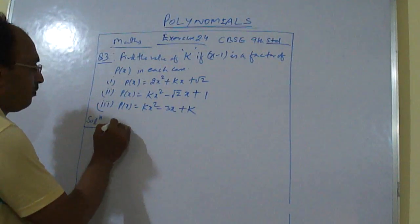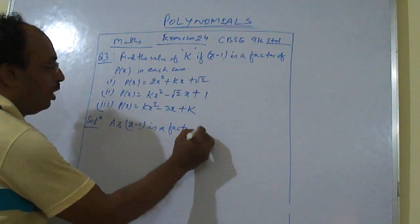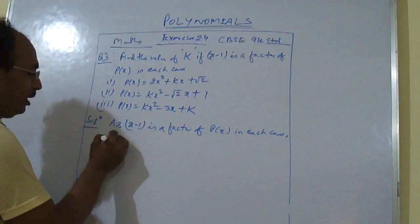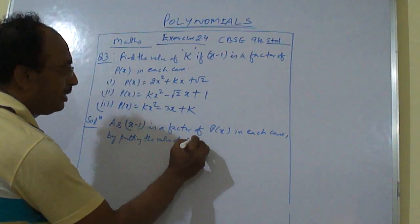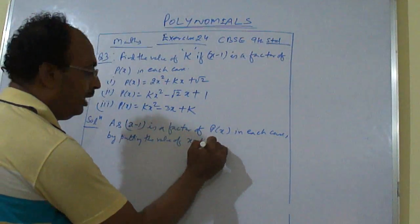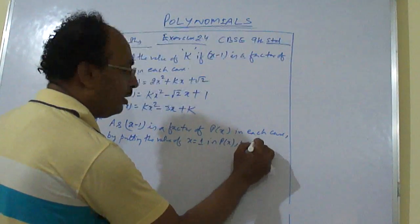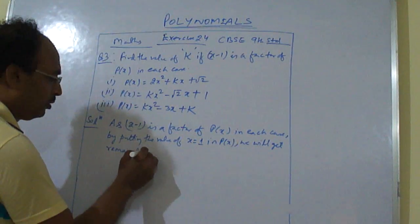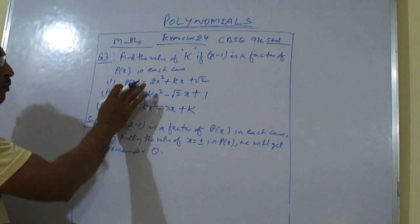As x minus 1 is a factor of p(x) in each case, by putting the value of x equal to plus 1 in p(x), we will get remainder 0. And while putting this remainder 0, only we will be finding out the value of k.